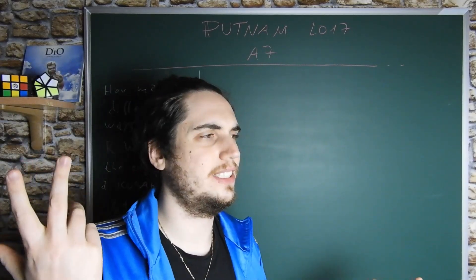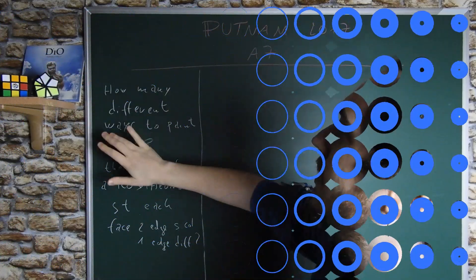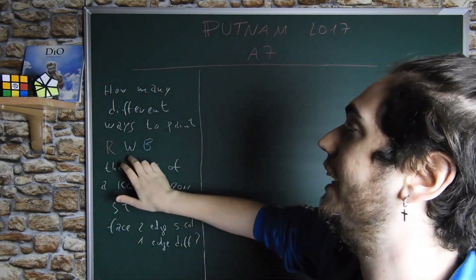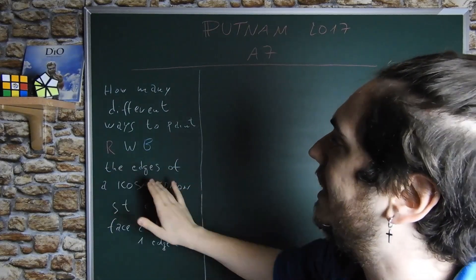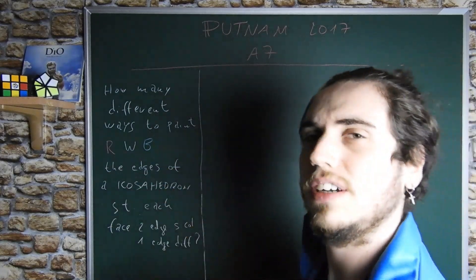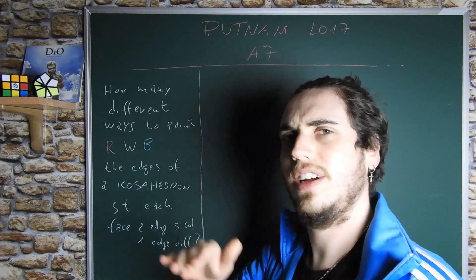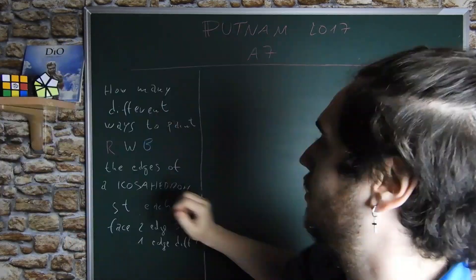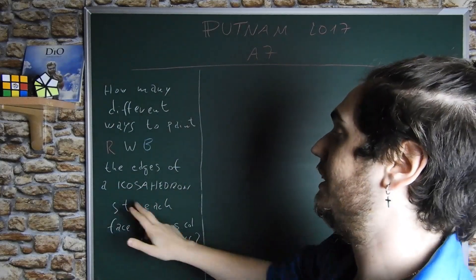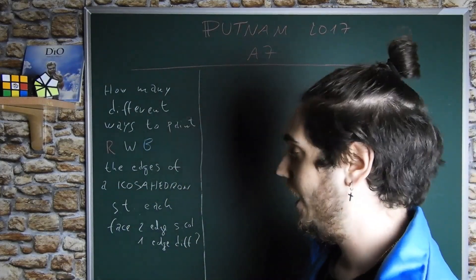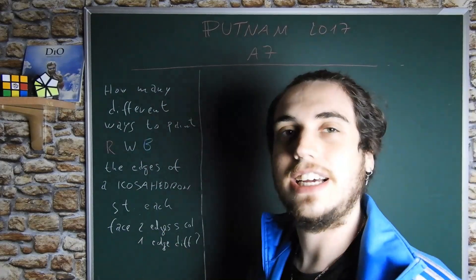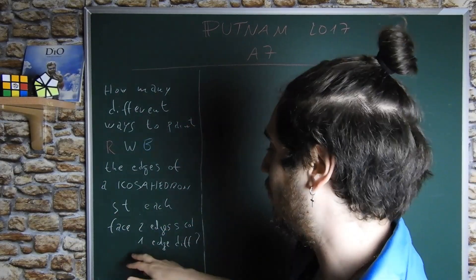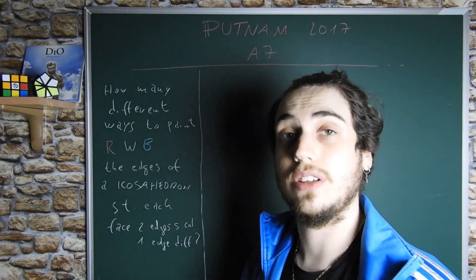So what does this problem ask? How many different ways to paint in red, white or blue the edges of an icosahedron, such that each face has two edges of the same color and one edge of a different color?